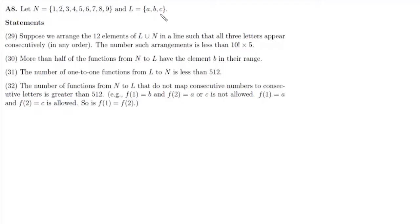Now statement 29 is: suppose we arrange 12 elements in a line such that all three letters appear consecutively in any order. The number of such arrangements is less than 10! × 5. Now we have to arrange 12 elements. Out of these 12, these three elements A, B and C, they must occur together.